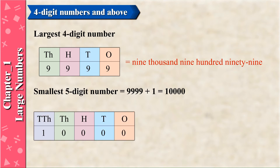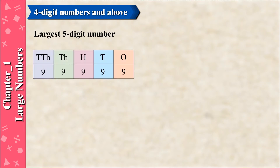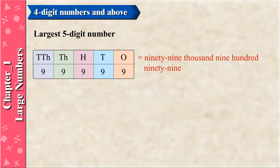The smallest five-digit number, 10,000, is represented as TTH=1, TH=0, H=0, T=0, O=0. The largest five-digit number is 99,999, represented as TTH=9, TH=9, H=9, T=9, O=9.